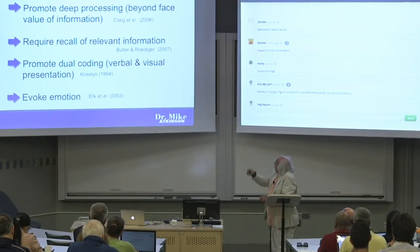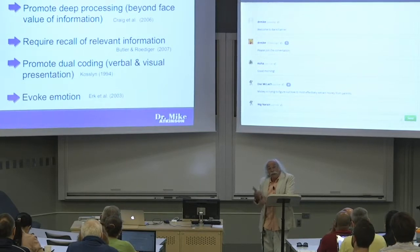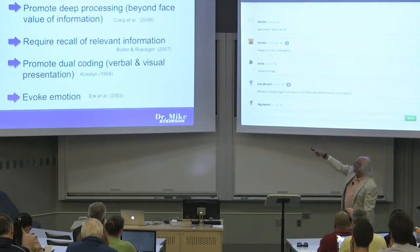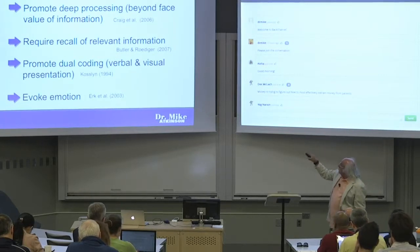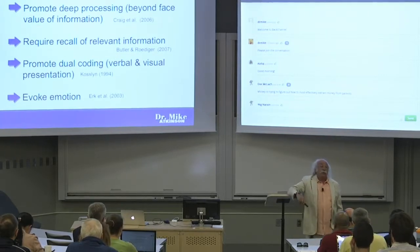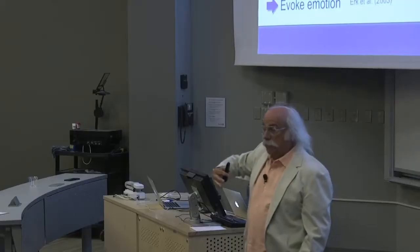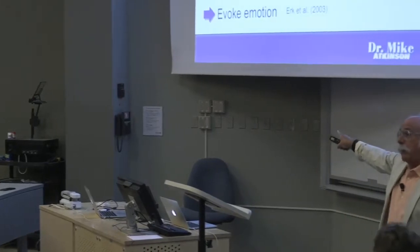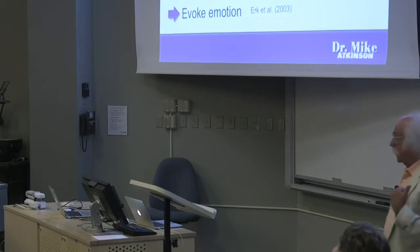Require recall of relevant information — you've got to come up with something in order to connect it to something. Promote dual coding — what Kostlin's talking about is make sure that we present the material in a variety of ways. When you do that, you actually enhance the memory tags; it gets in faster, does a lot of connections there. Evoke emotion — apparently that works too because emotion can be a tag for memory recall, and so it sticks things in that way.